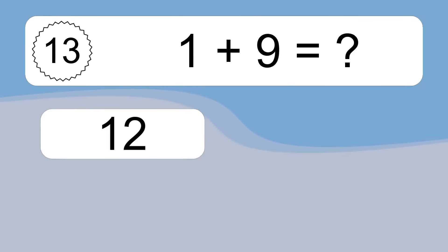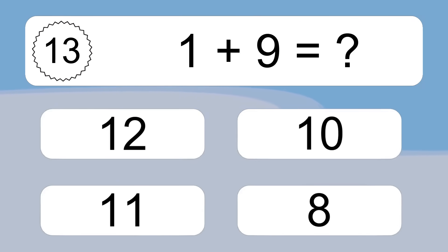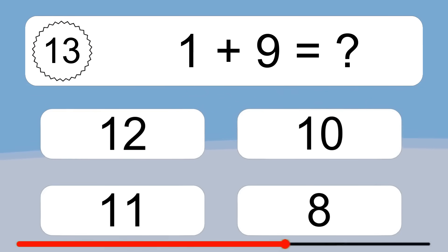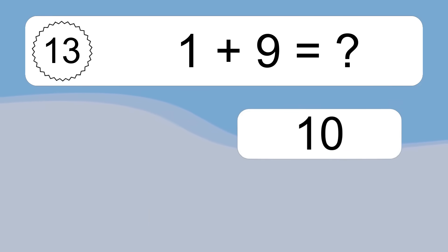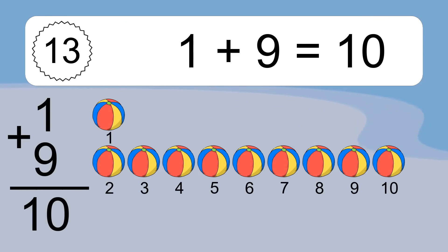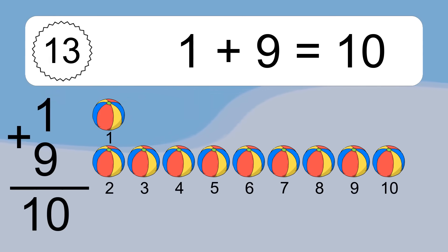1 plus 9 equals what? 1 plus 9 equals 10. Let's count it: 1, 2, 3, 4, 5, 6, 7, 8, 9, 10.